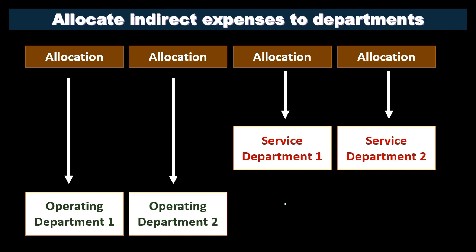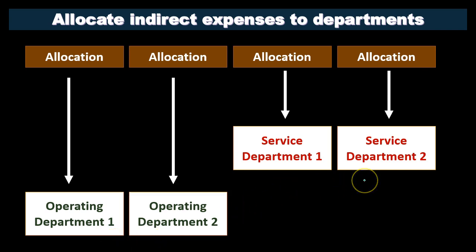It depends on the system that we are using. These are going to be costs that are benefiting multiple different departments, so we'll need some type of process to allocate them out and determine how much to apply to each department. We'll apply those costs out to both the operating departments and the service departments.